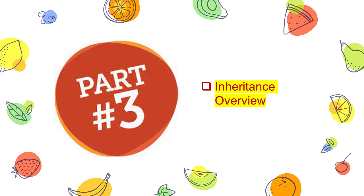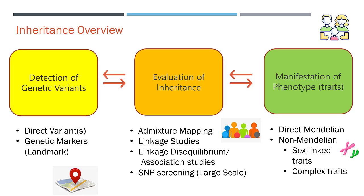Moving on to Part 3, we will provide an inheritance overview. From an inheritance perspective, detection of genetic variants — typically using genetic markers — is useful to help in evaluation of inheritance, which in turn is interconnected to manifestation of phenotype. For evaluation of inheritance, admixture mapping is a powerful method of gene mapping for diseases or traits that show differential risk by ancestry. Other approaches include linkage studies as well as single nucleotide polymorphism (SNP) screening.